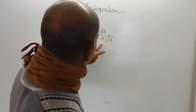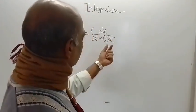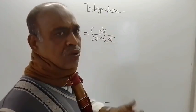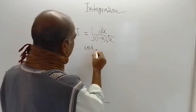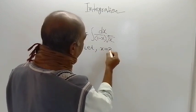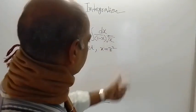Here 1 minus x and root of x is there. You just assume this x is equal to z square. So let x equals z square. And now differentiate both sides of this.